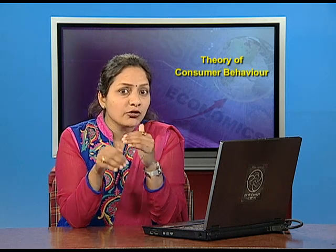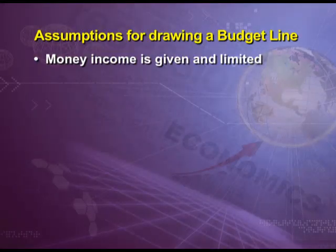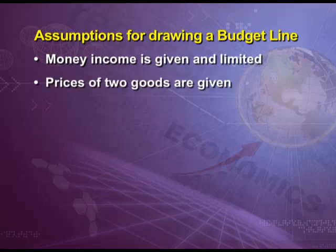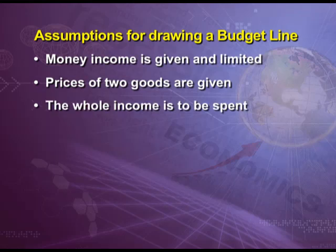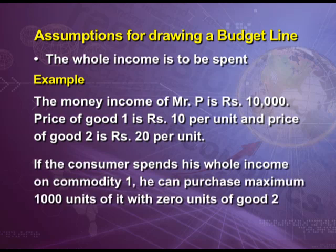The assumptions for drawing a budget line are as follows: first, money income is given and it cannot be changed, that is it is limited; second, prices of two goods are given; third, whole income is to be spent. Let us take an example. The money income of Mr. P is rupees 10,000, price of good 1 is rupees 10 per unit and price of good 2 is rupees 20 per unit. If the consumer spends his whole income on commodity 1, he can purchase maximum 1000 units of it with 0 units of good 2.